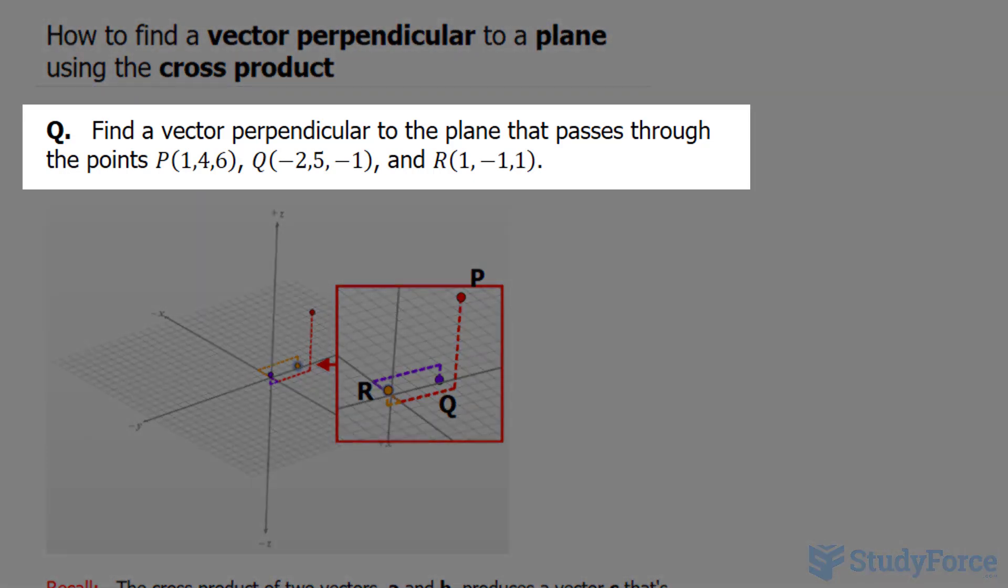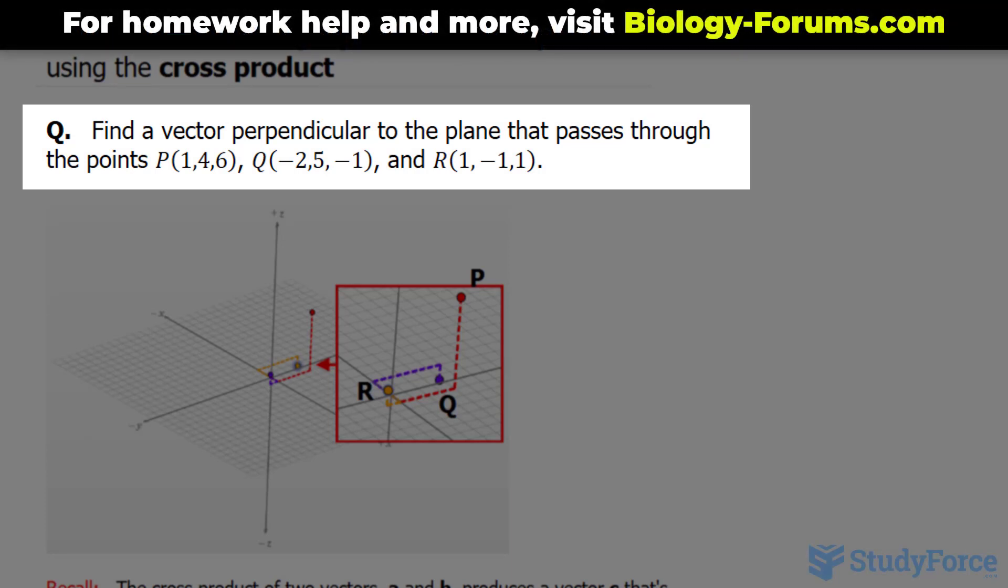The question reads, find a vector perpendicular to a plane that passes through the points P, Q, and R.